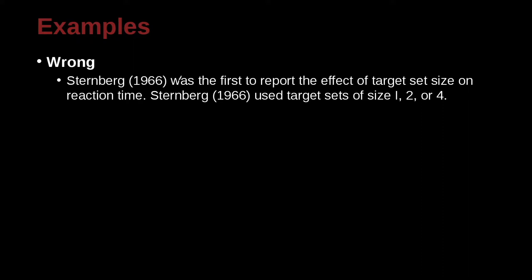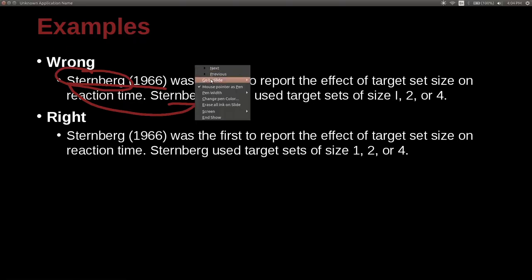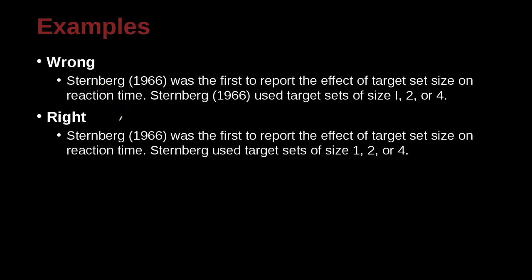Thurnberg (1966) was the first to report the effect of target set size on reaction time. Thurnberg (1966) used a target set of size one, two, or four. Here we have the special case of the same paper repeated twice in one paragraph. If the author is outside the parentheses and repeated in the same paragraph, you do not need to repeat the date. So the second reference is just 'Thurnberg' with no year.